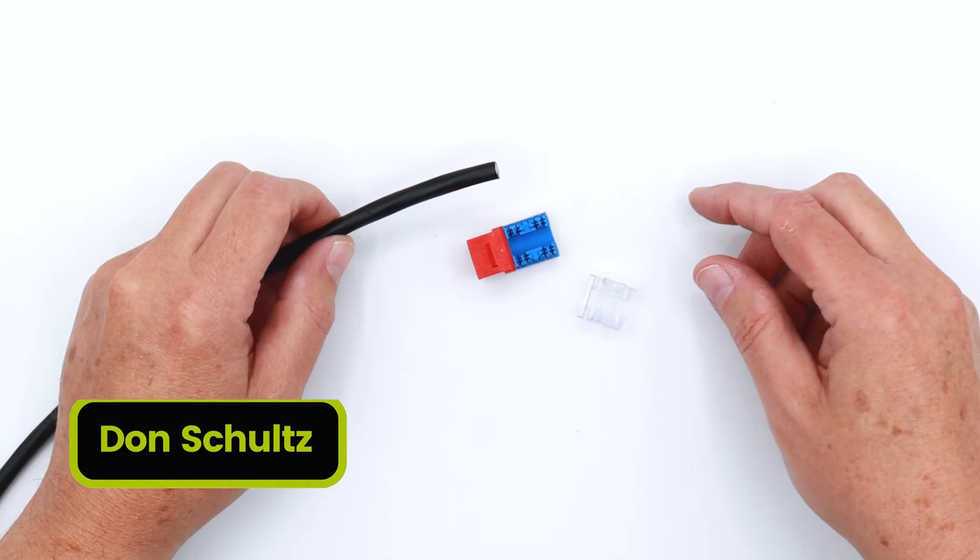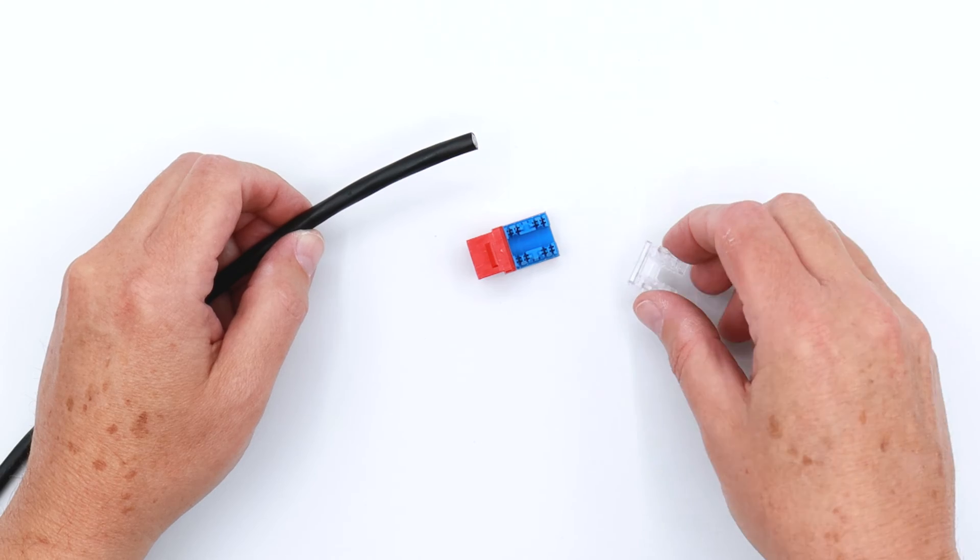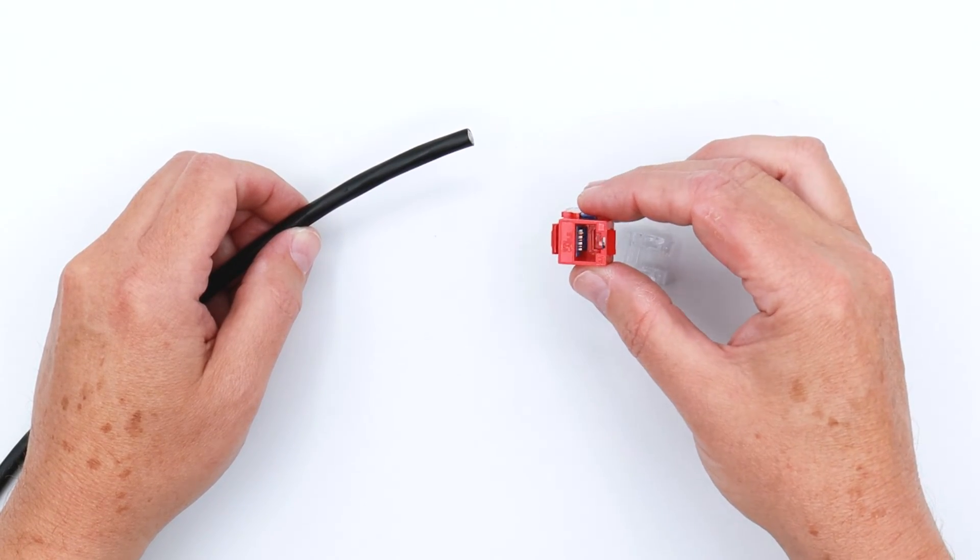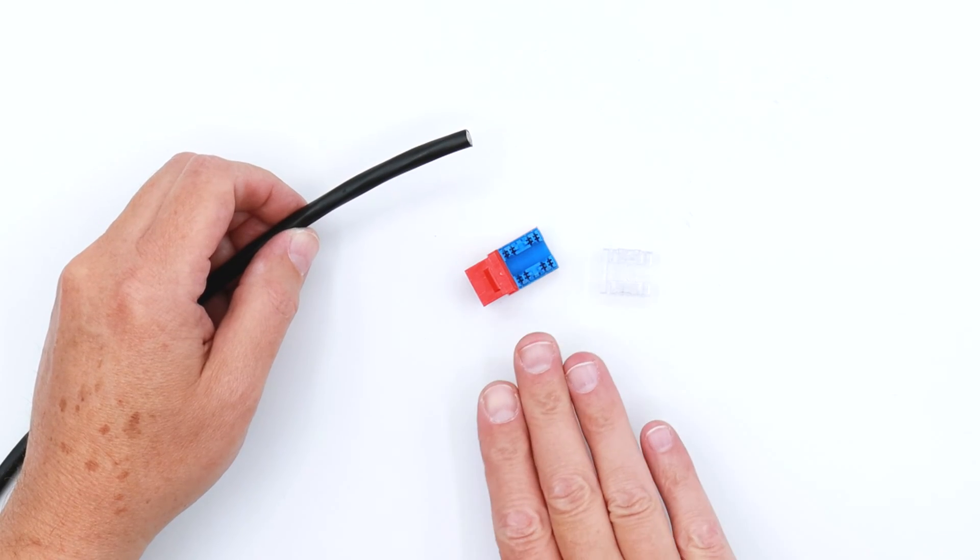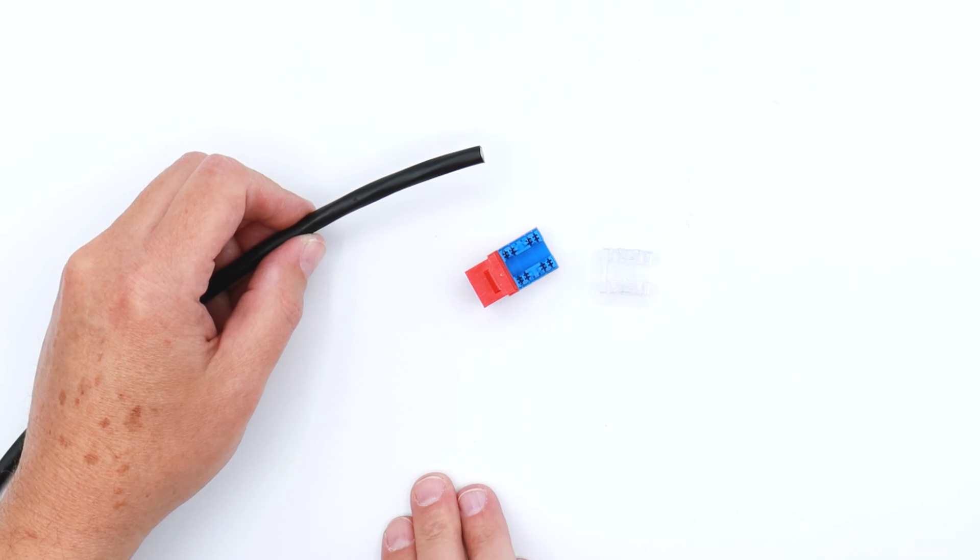Okay, continuing on with our Category 6A unshielded direct burial cable, the next termination up is going to be an unshielded punchdown Category 6A keystone jack. And this is the most recommended way of terminating Ethernet period, but especially Cat 6A.